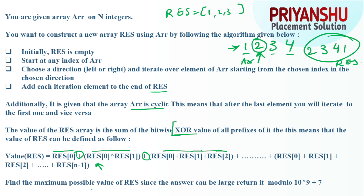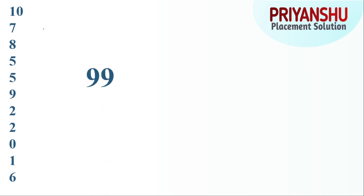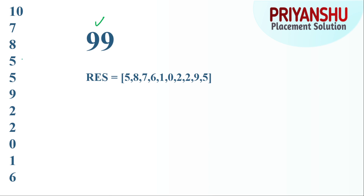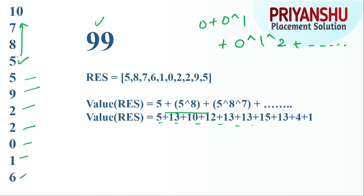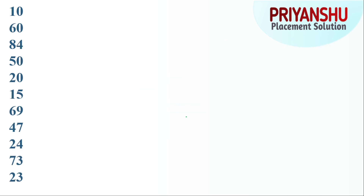Let me walk through the first example. The starting element chosen is five, followed by eight and seven, then they moved to six, one, zero, two, two, nine, five — covering the full cyclic array. The value of `res` is computed as: index zero gives 5, XOR of first two gives 13, XOR of first three gives 10, and so on, yielding values 5, 13, 10, 11, 13, 13, 15, 13, 4, 1. Adding these gives 99, which is the correct answer.